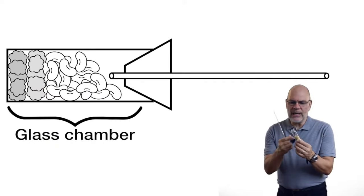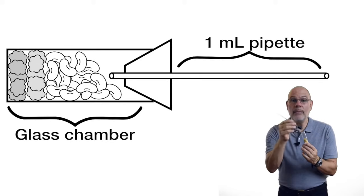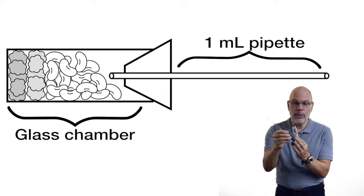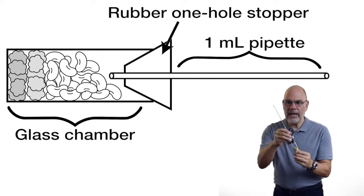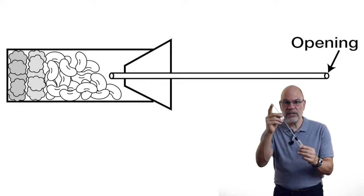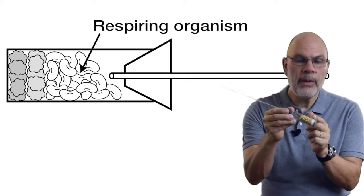There's a glass chamber, like a test tube or a small bottle. At the opening, there's a one milliliter pipette that's been jammed through a rubber stopper. And when the rubber stopper is in place, the only opening into the system is through this hole. Our respiring organism goes in here, and then there are two layers of cotton.